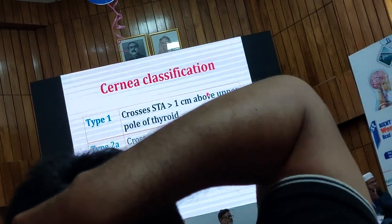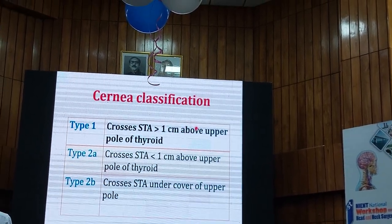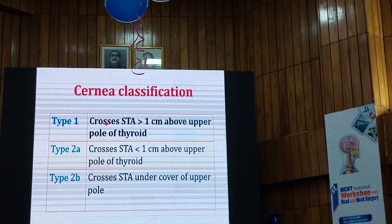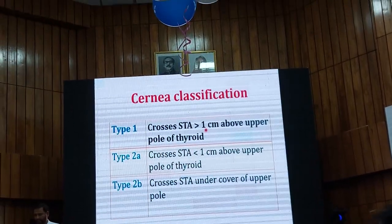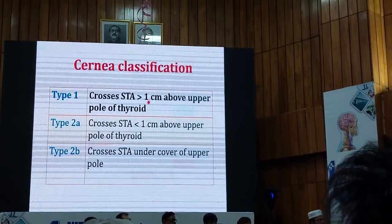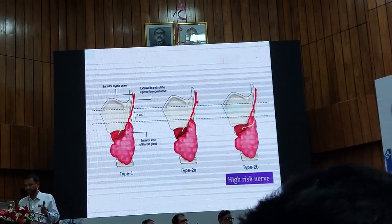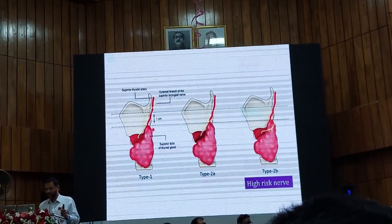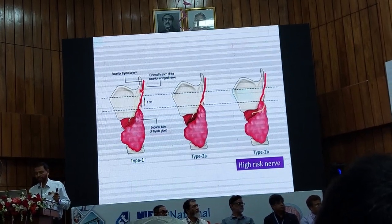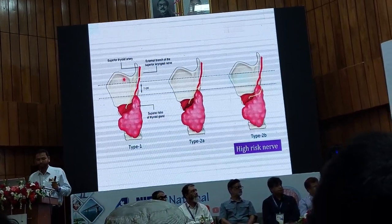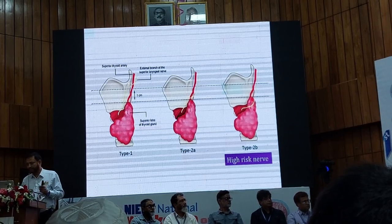For the external branch, the Brazilian thyroid surgeon made a classification — Type 1, Type 2A, and 2B. Type 1 is where the EBSLN crosses more than 1 centimeter above the upper pole. Type 2A is within 1 centimeter above the upper pole, and 2B is below the upper pole. Type 2 is called the high-risk EBSLN. Type 1 is the safe EBSLN where the chance of injury is less, but Type 2B is underneath the upper pole and carries more risk — with all attempts, you may still injure the nerve.